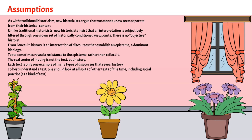From Foucault, history is an intersection of discourses that establish an episteme — a dominant ideology. Texts sometimes reveal a resistance to the episteme rather than reflect it. The real center of inquiry is not the text but history. Each text is only one example of many types of discourses that reveal history. To best understand a text, one should look at all sorts of other texts of the time, including social practice as a kind of text.